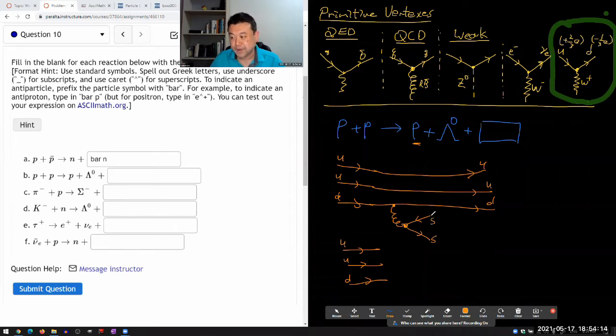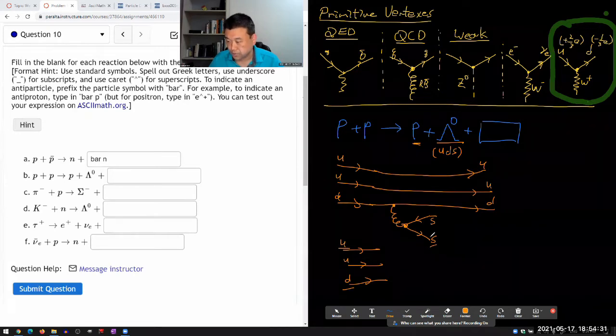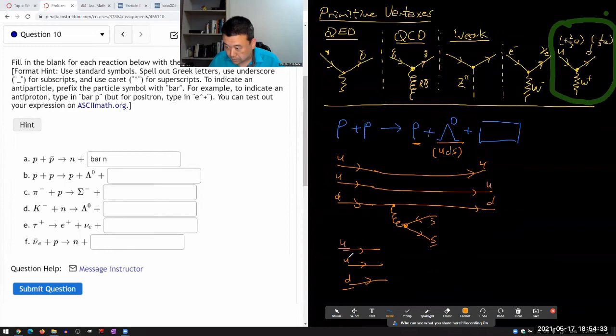That particle-antiparticle pair had better be strange and anti-strange quark, because I know I have one strange quark here. Lambda zero has one strange quark, and I think the rest of the quarks should be up and down. Looking at here, one up, one down, and one strange is spoken for. So I guess one remaining up and the anti-strange quark will be pairing up.